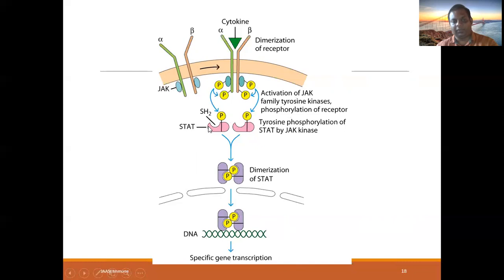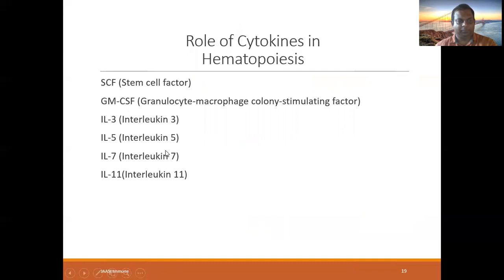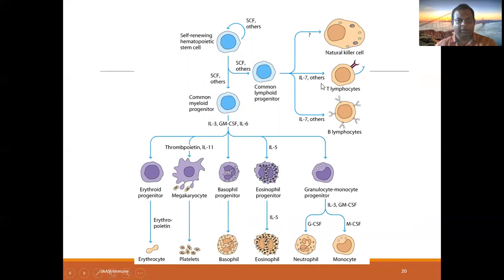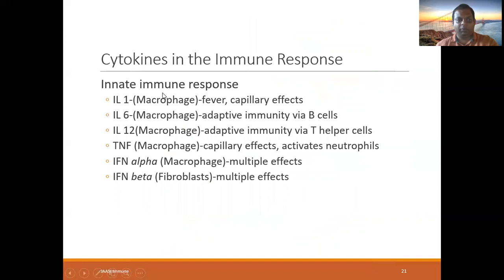Under the influence of cytokines, hematopoiesis occurs. Interleukins play a role: interleukins 1 and 7 support common lymphoid progenitor and T lymphocyte formation. Interleukin-5 acts on the eosinophil progenitor. IL-3 supports granulocytes. Granulocyte-monocyte colony stimulating factor, granulocyte colony stimulating factor, and monocyte colony stimulating factor are all involved.